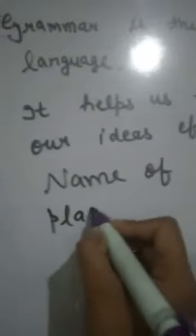Now the first topic of grammar is noun. What is noun? Name of a person, place, or thing is called noun. In other words, we say that naming words are called noun.